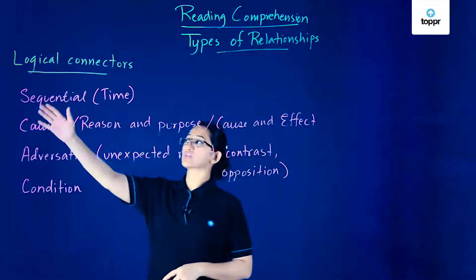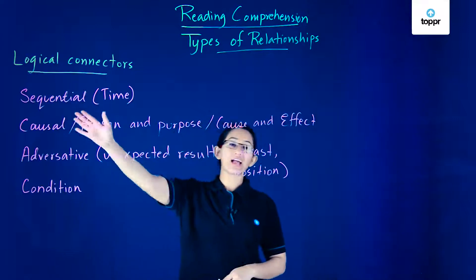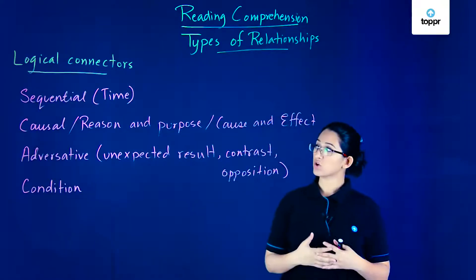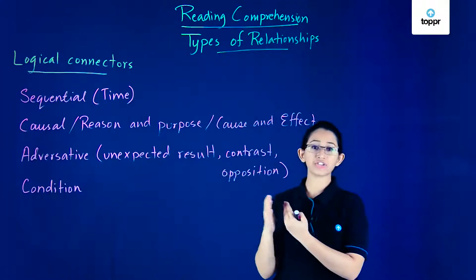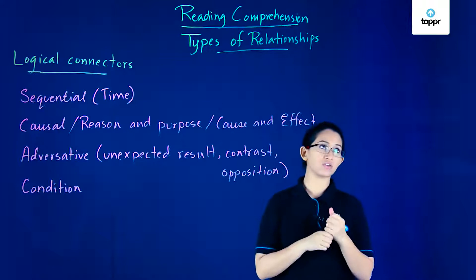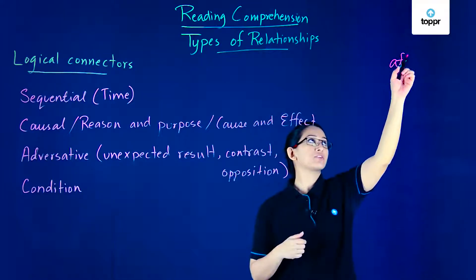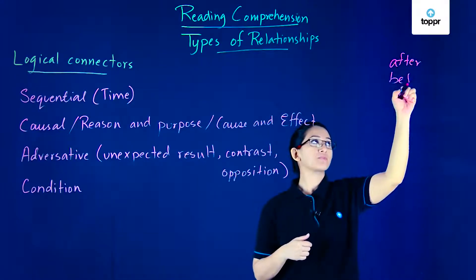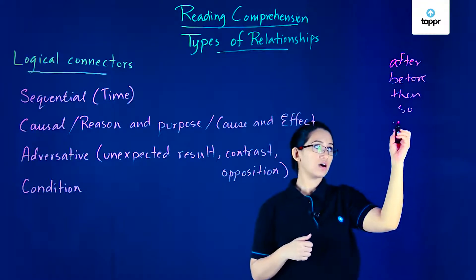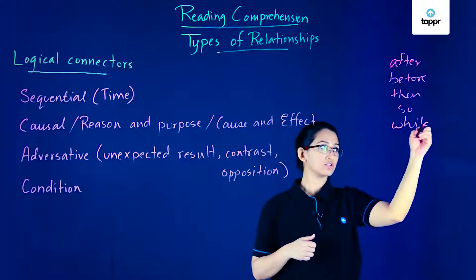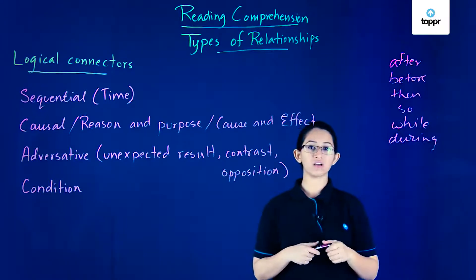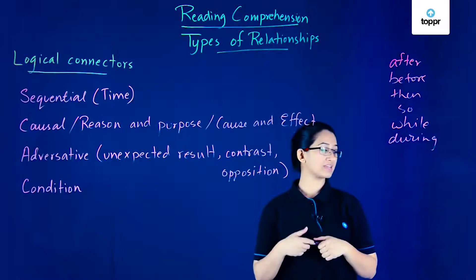The first one here is called the sequential or time-related logical connector. In these kinds of connectors we have a relationship of time. Let's say one thing happens after another. Words like after, before, then, so, while, during - you can notice that many of the words I've written are prepositions or they could be conjunctions.